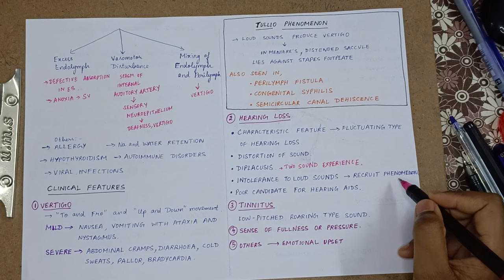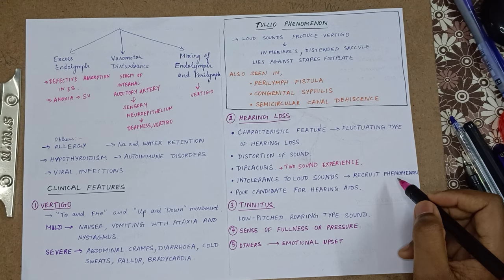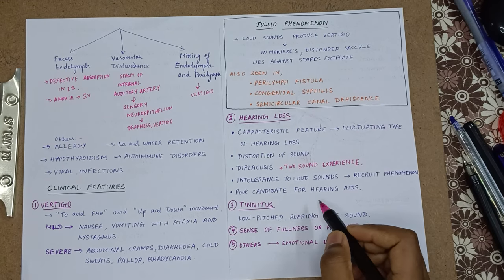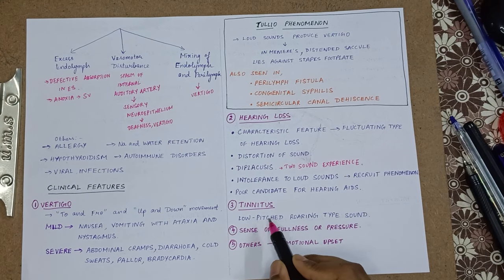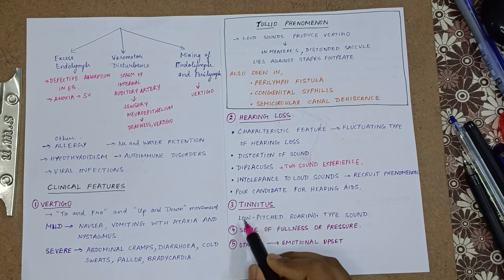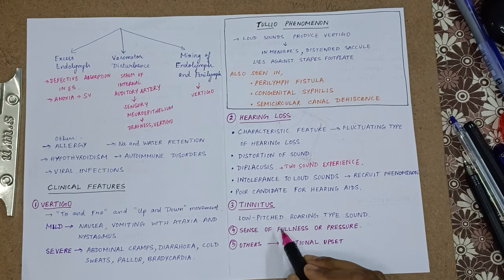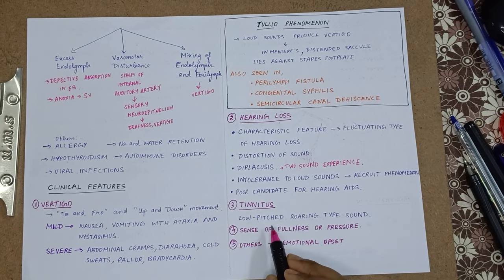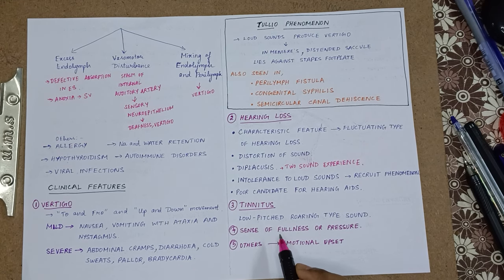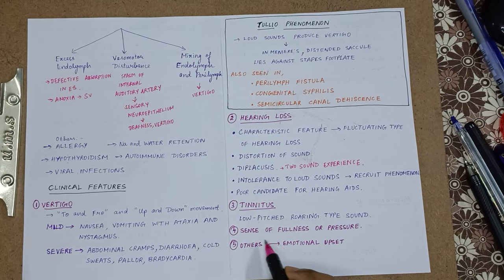He will have intolerance to loud sounds due to the recruitment phenomenon. When there is increase in loud sounds, he cannot bear them, so he is a poor candidate for hearing aids. The third one is tinnitus — tinnitus is a low pitch roaring type of sound heard in Meniere's disease. The fourth one is a sense of fullness or pressure.